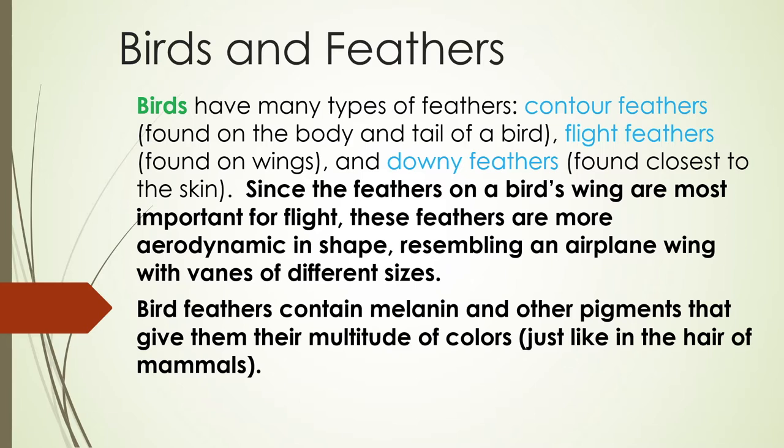As you can see, birds have many different types of feathers. Contour feathers, which are found on the body and the tail of a bird. Flight feathers, which are found on the wings. And downy feathers — these are the feathers found closest to the skin. Since the feathers on a bird's wing are most important for flight, these feathers are more aerodynamic in shape, resembling an airplane's wing with veins of different sizes.